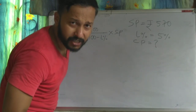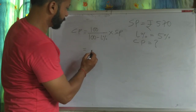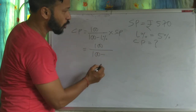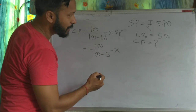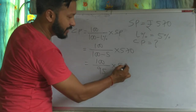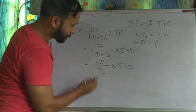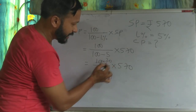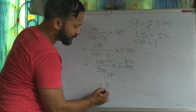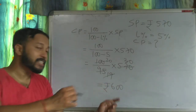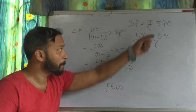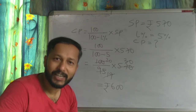Putting the values: CP equals 100 by (100 minus 5) into 570, that is 100 by 95 into 570. After calculation, the cost price is rupees 600. When loss percent is 5% and SP is 570, the cost price is 600.